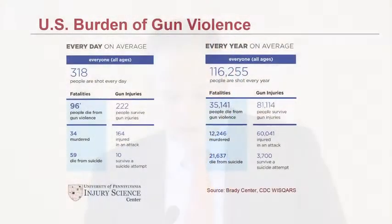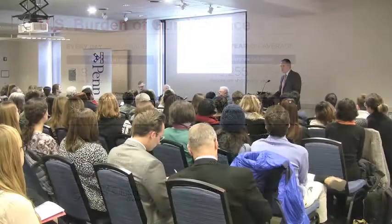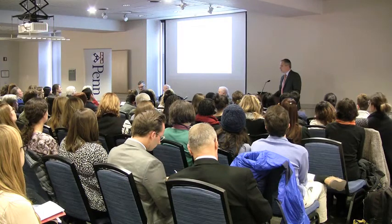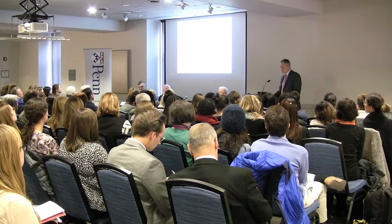But what does this look like in the overall burden of gun violence in the United States? Every single day, about 318 people are shot in the United States, of whom 96 will die. Of those who die, about 34 are murders and about 60 are suicides — so roughly one third of daily gun deaths are from homicides and about two thirds are from suicides.